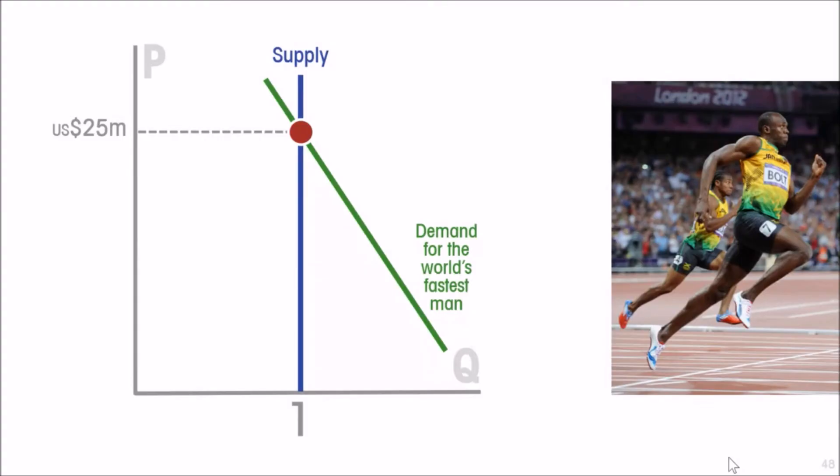So the demand for an appearance by the fastest man in the world is huge. Since there is no way to increase the supply of the fastest man in the world, then the price at which that market clears is around 25 million dollars a year.